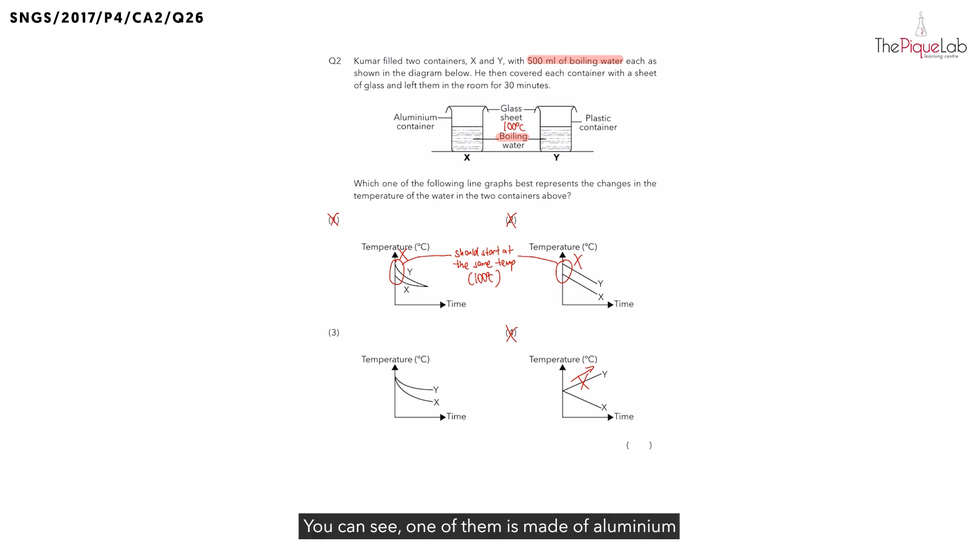You can see one of them is made of aluminium while the other is made of plastic. Now, what is the difference between aluminium and plastic? Now, we know that aluminium is a metal. And metals compared to plastic, it is a better conductor of heat.